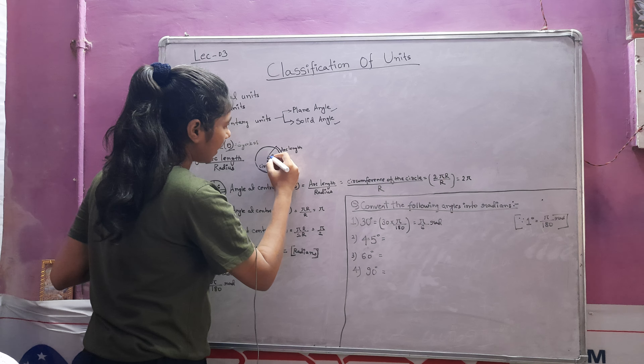Likewise, in the second case — the semicircle — the angle at centre is 180 degrees. How will we find it? Arc length upon radius. It is half the circumference, so we put πr, and again r cancels out, and we are left with π radians.